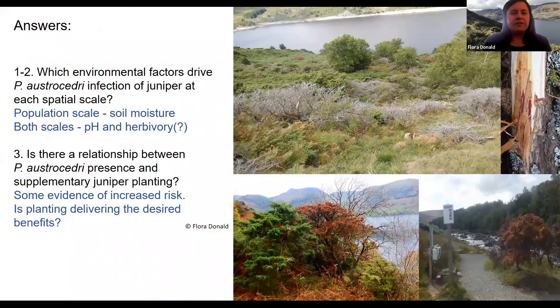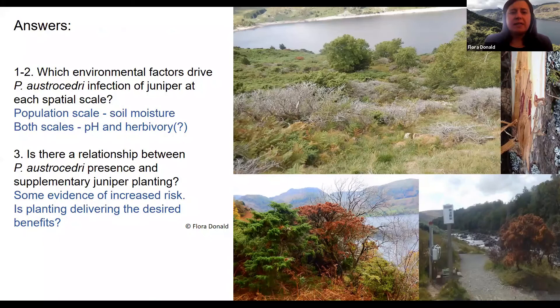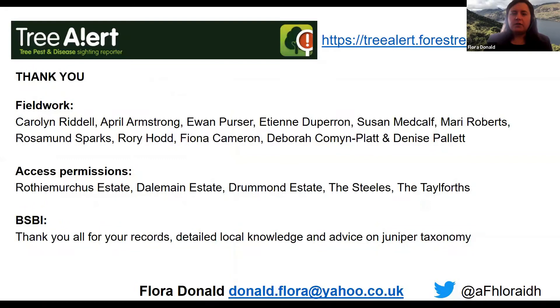To summarise the answers to my initial questions: if you are looking for Phytophthora austrasidri where it hasn't been detected yet, at the site level look for places with high soil moisture. At both the site and national scale, soil pH and herbivory are likely to guide where the pathogen is most likely to establish. There is some increased risk associated with supplementary planting, and before we can assess the need for planting it would be really useful to understand better whether planting is delivering the desired benefits to juniper populations. If you see something in the field that looks like it could be austrasidri infection or any other tree infection, please collect information and send a Tree Alert — somebody at Forest Research will get back in touch to try and look for a diagnosis.